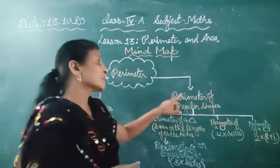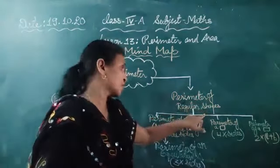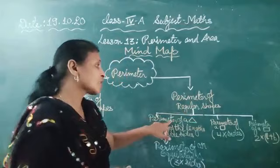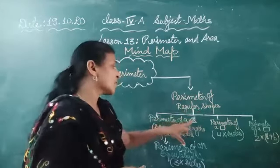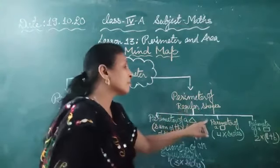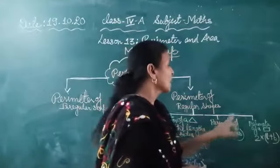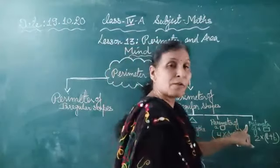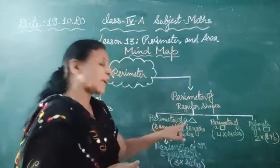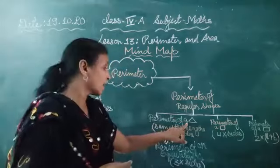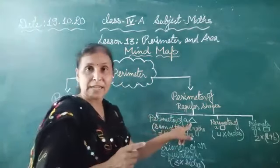Now comes the perimeter of regular shapes. That is: first, perimeter of a triangle; then perimeter of a square; then perimeter of a rectangle. Let's come to the perimeter of a triangle — that is the sum of the lengths of three sides.